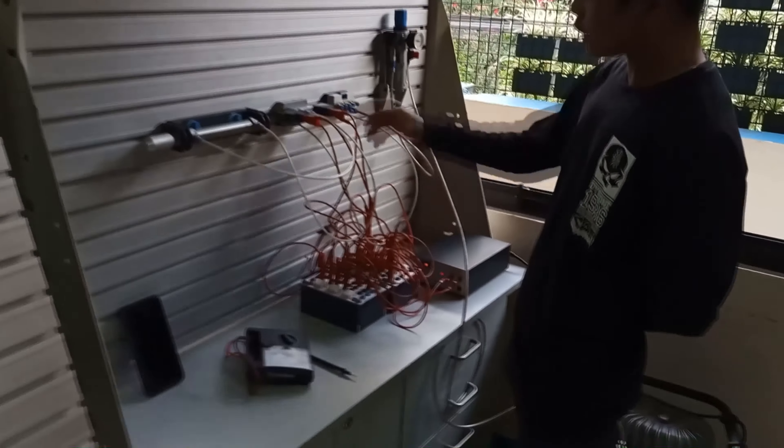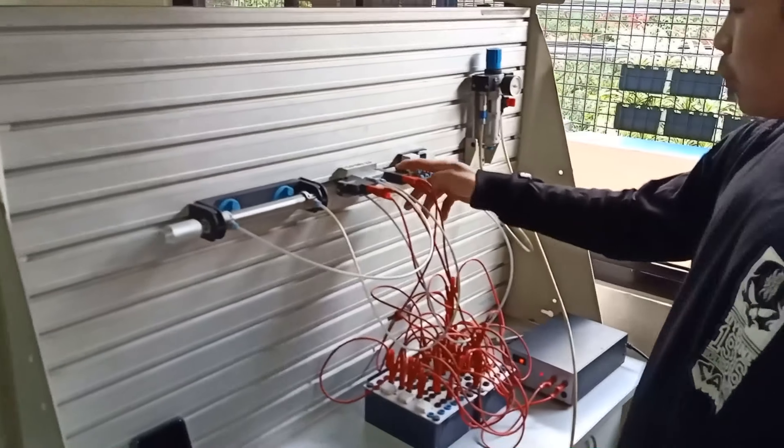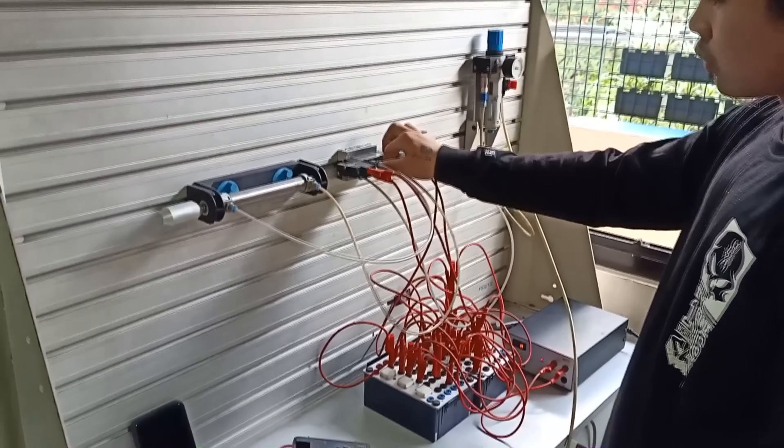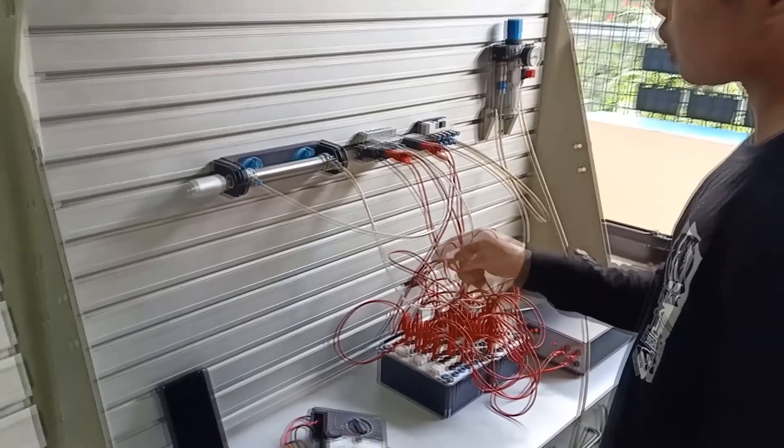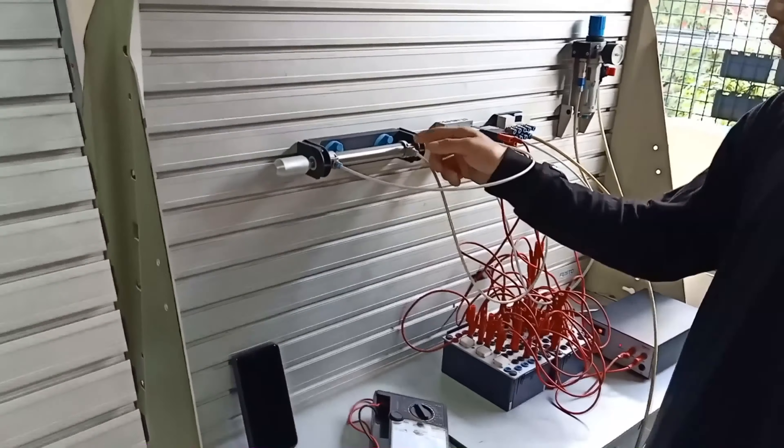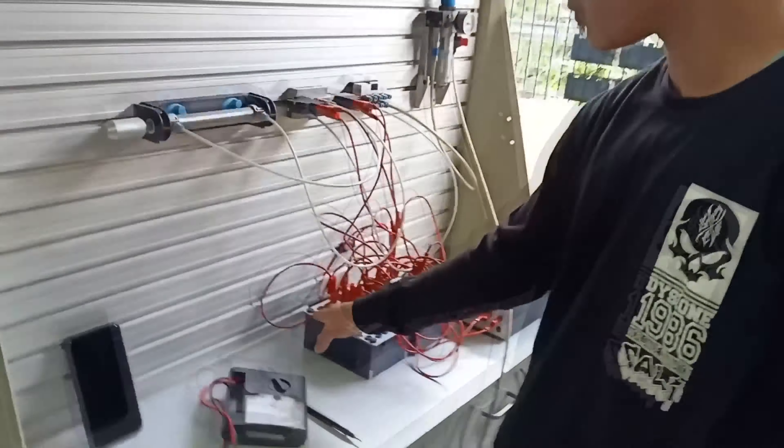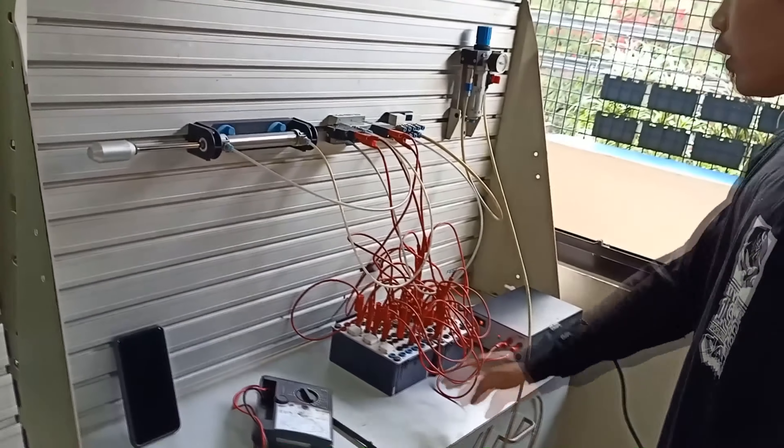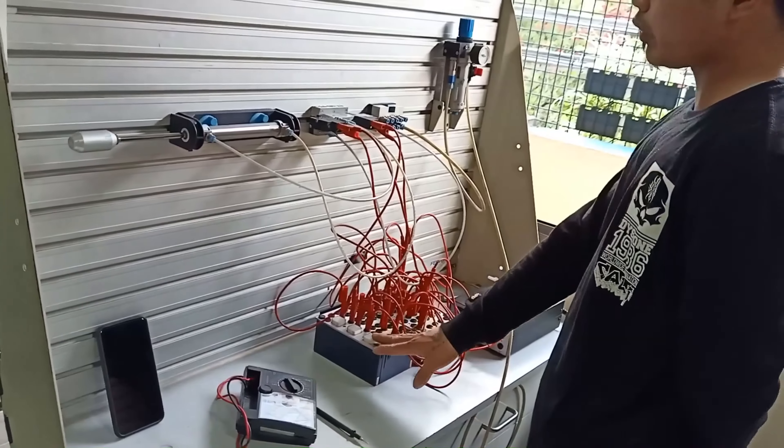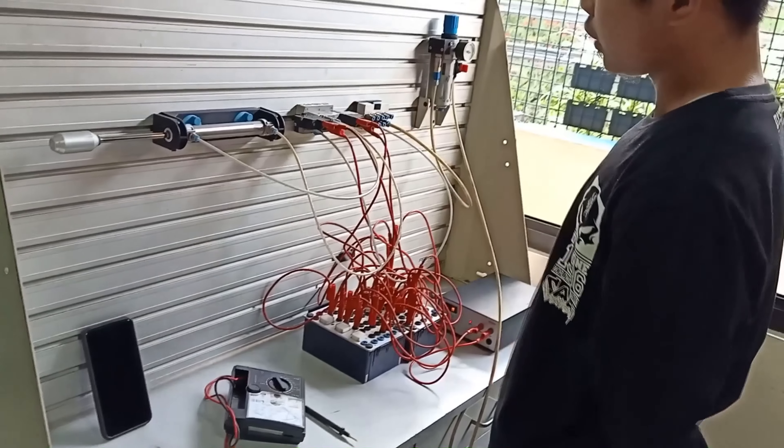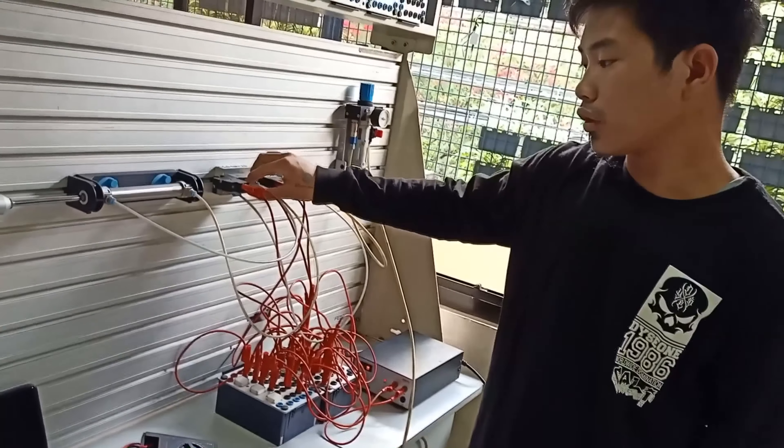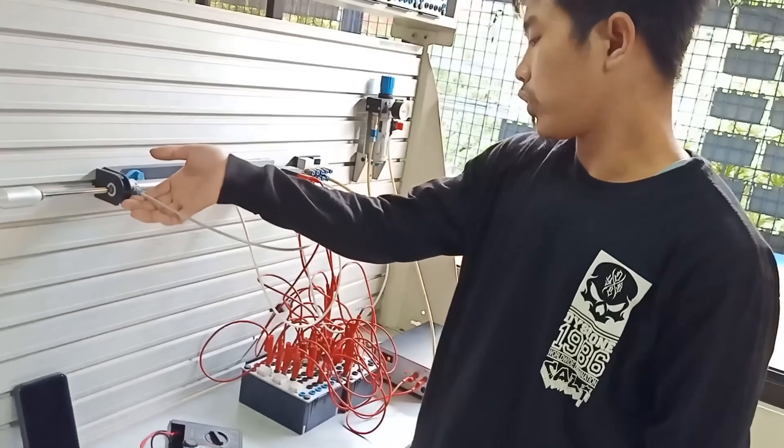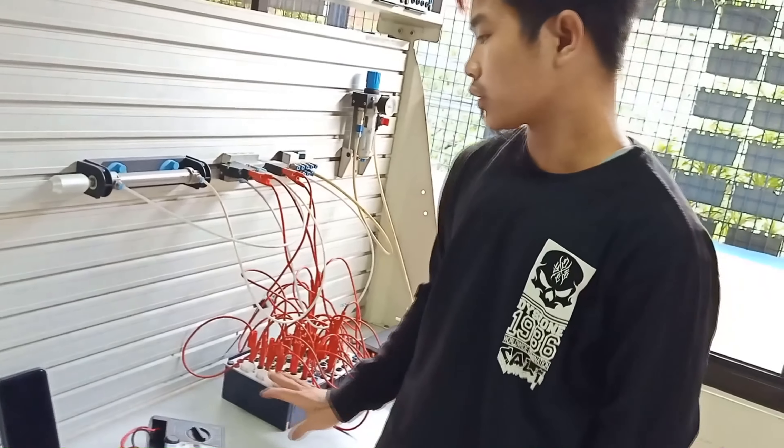Like, when we are going to energize the coil A, this port will open and the compressor will go into this port, that pushing the piston and there will be an extension. Likewise, when we are going to open the coil B and energize, this port will open and the compressor will go into this port, and that would be a retraction happens.